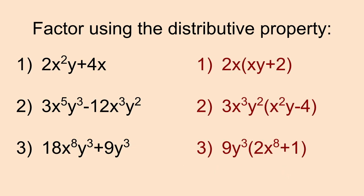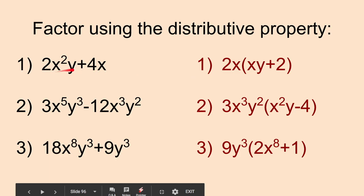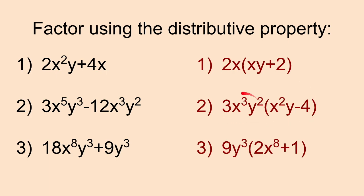And here are our answers for numbers 1 through 3. These are a little bit more challenging. For number one, from both of these terms, we can factor out a 2 and we can factor out a single x. We can factor out 2x. That leaves us with 2x(xy + 2) would remain. For number two, we can factor out quite a bit, actually. We can factor out 3x³y². And when we do that in this first term, we need it so that when we multiply and distribute it here, we need to have 3x⁵y³.